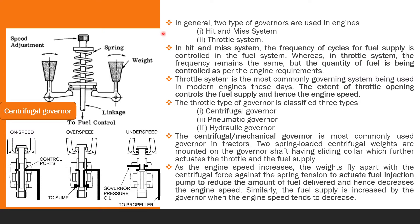In the throttle governor system, the frequency remains the same — the frequency of fuel supply to the engine is always the same — but the quantity of fuel being controlled as per the engine load requirement. So the basic difference is: in hit and miss, frequency of cycle for fuel supply is controlled; whereas in the throttle governor system, the quantity of fuel is controlled as per load.